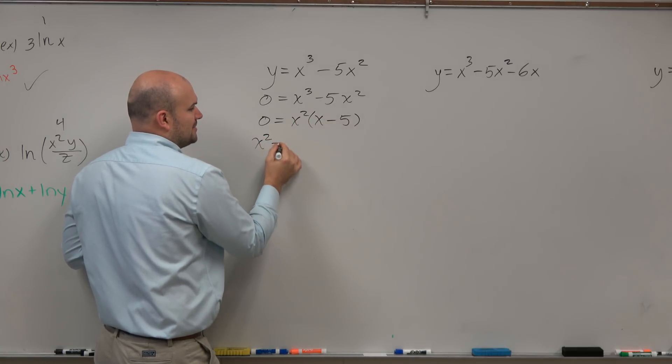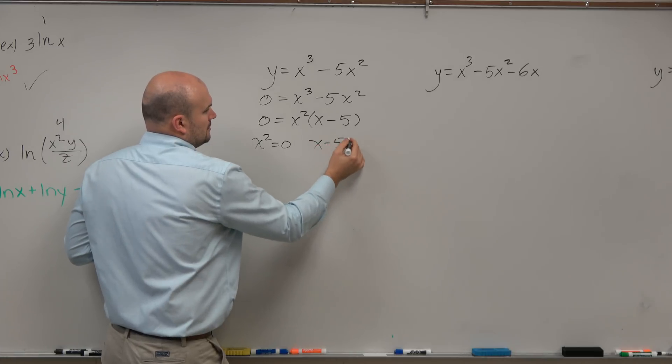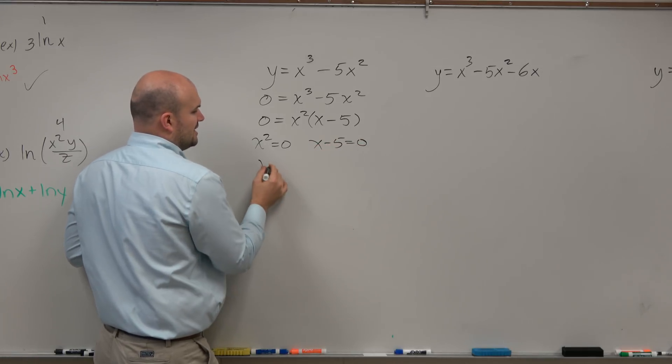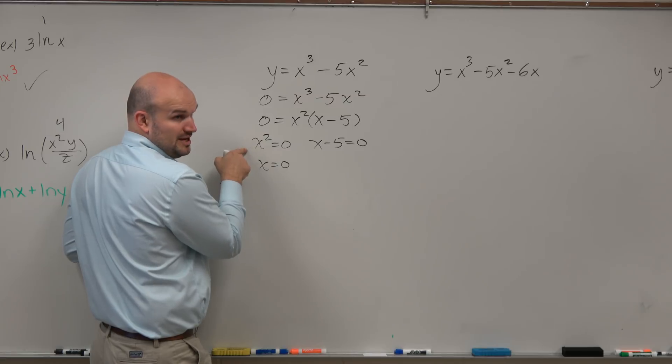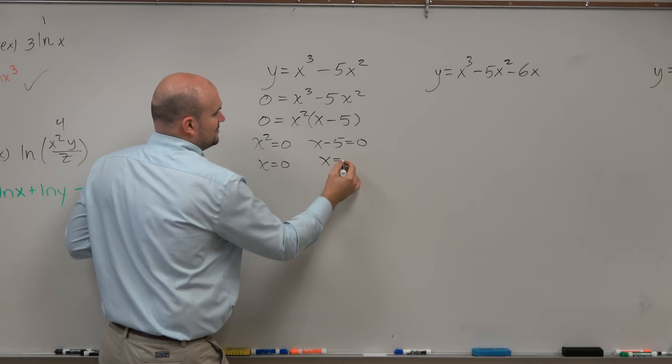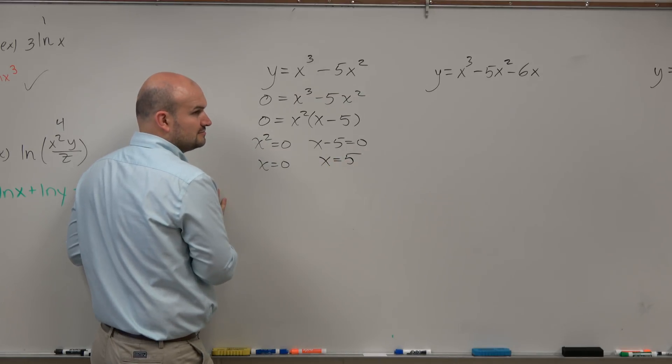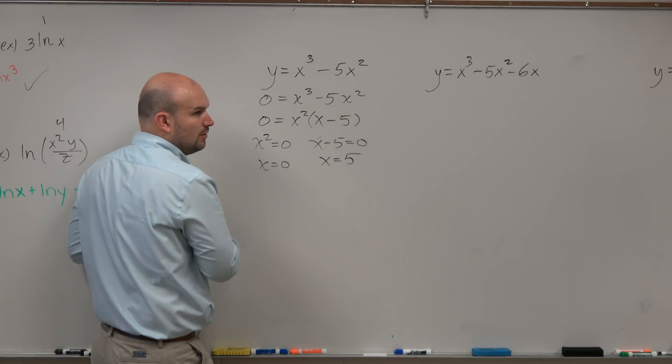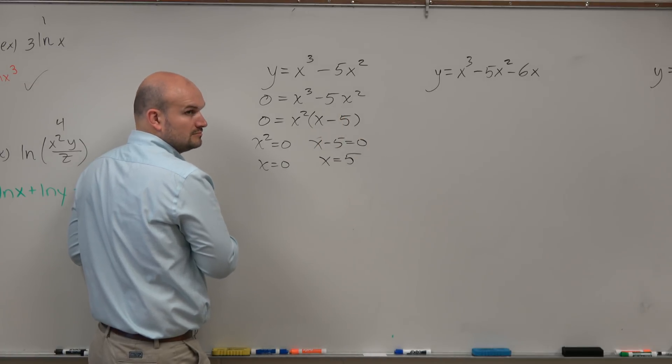Now we can apply the zero product property. And you can say x is equal to 0, multiplicity of 2, it bounces. x equals 5, multiplicity of 1, right?